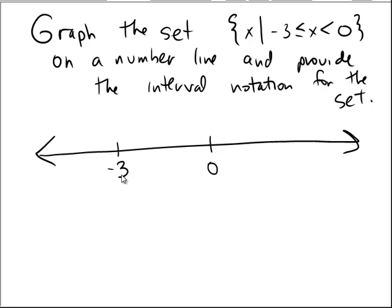Negative 3 is included in this particular set — it says negative 3 is less than or equal to x, so it is included. The way that we usually denote this on a number line is by using a closed dot or a bracket. I prefer the bracket, but our textbook is using a closed dot. So there's the closed dot.